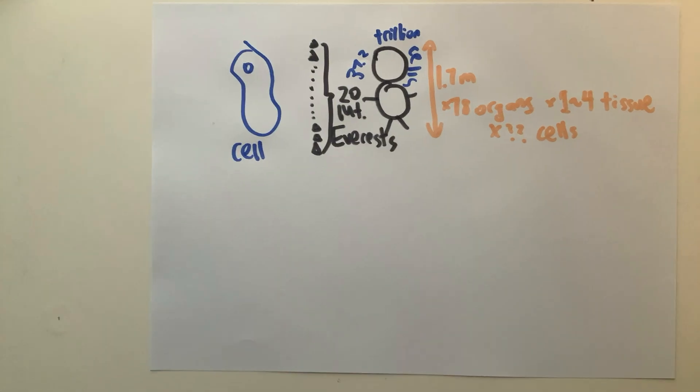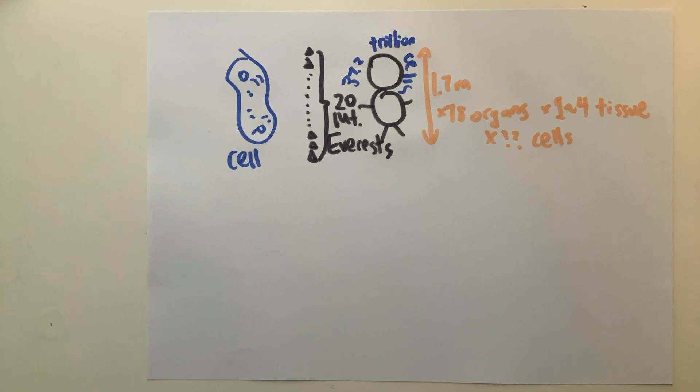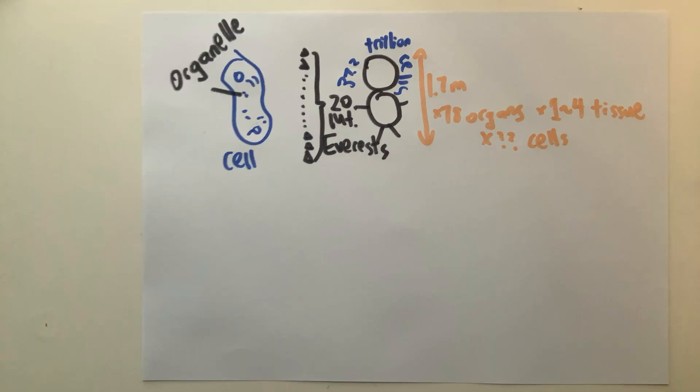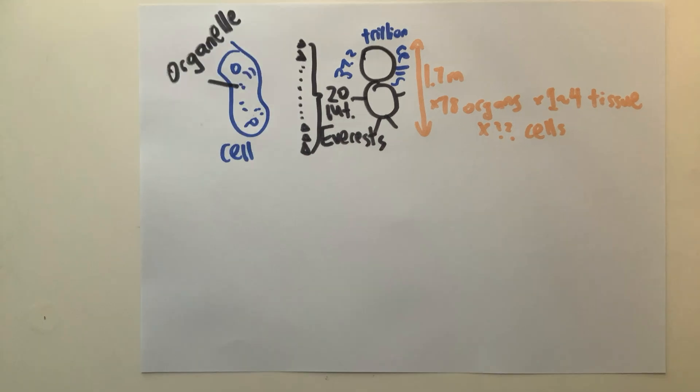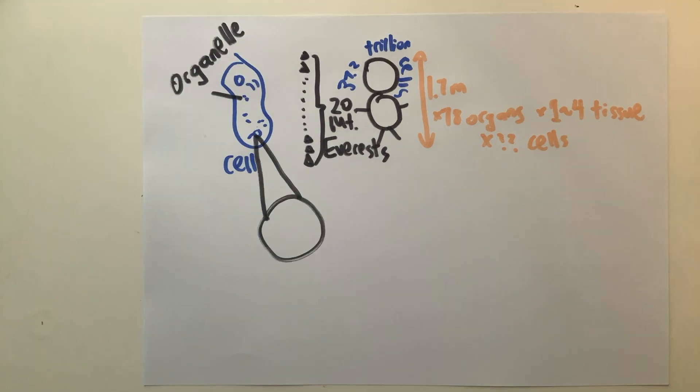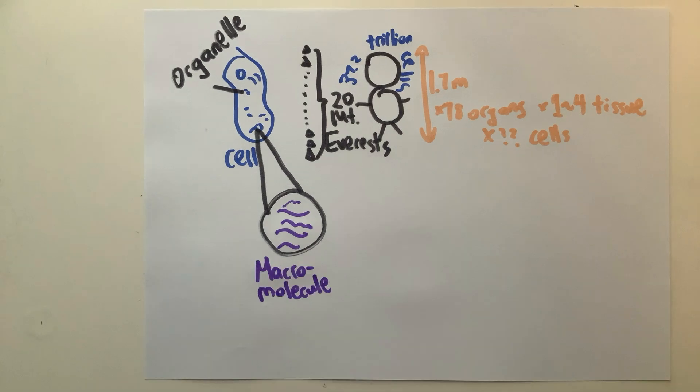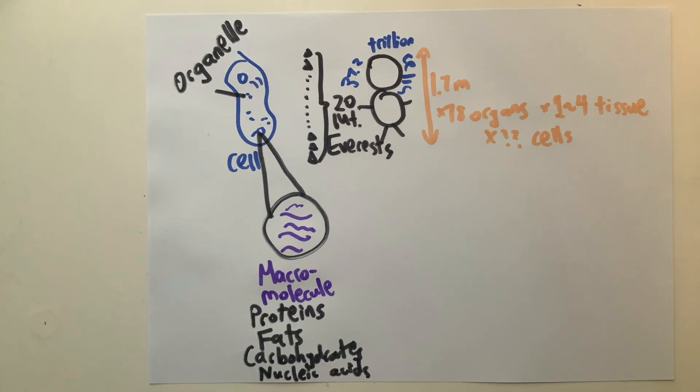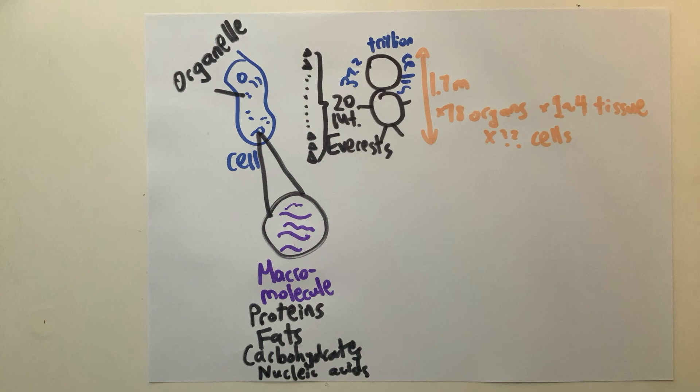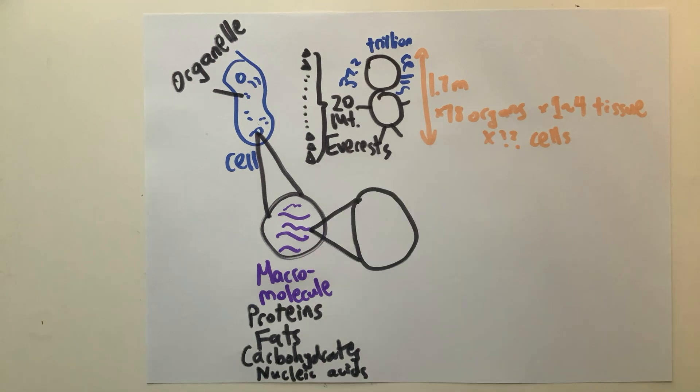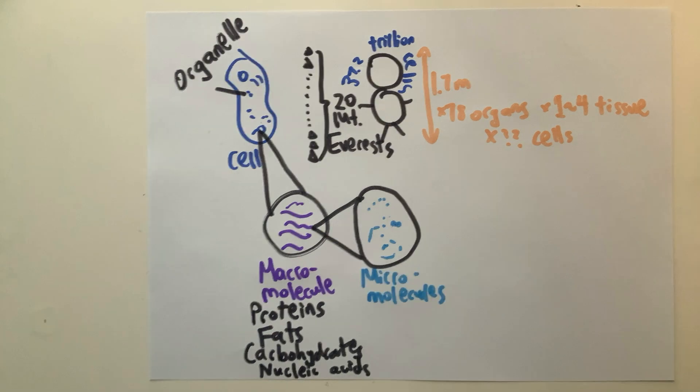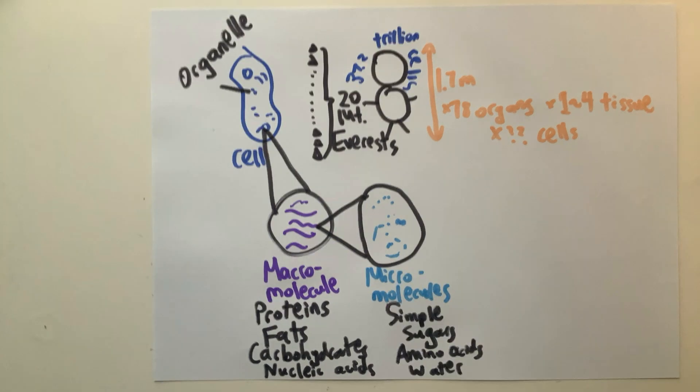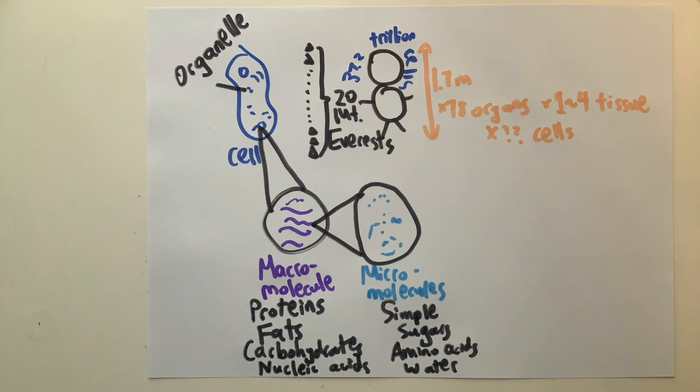Each cell is made up of smaller structures known as organelles, and each has its own function. Everything inside of the cell, including the organelles, is made up of macromolecules such as proteins, fats, carbohydrates, and nucleic acids, which themselves are joint chains of simpler micromolecules such as simple sugars, amino acids, and water. This is where biology meets chemistry.